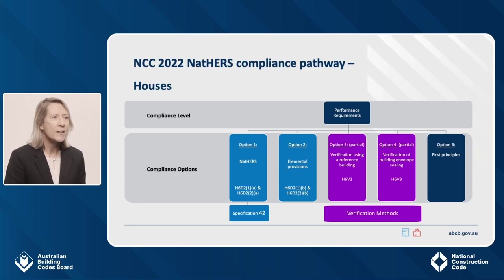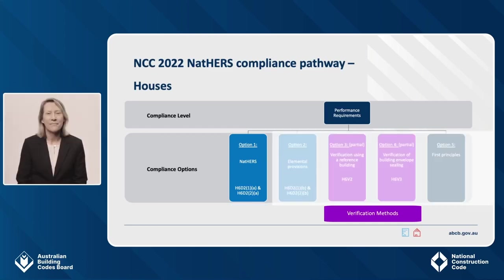This flowchart shows how the NatHERS compliance pathway for homes fits into NCC Volume 2 and the relationship it has with the performance requirements. In NCC 2022 Volume 2, all relevant clauses for the NatHERS compliance option are consolidated into Specification 42. The star ratings required in Specification 42 clause S42 C2 for heating and cooling loads have been changed to reflect the stringency increase for NCC 2022. The split heating and cooling load limits have been updated, which is included in the next slide.